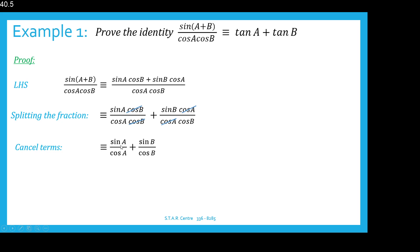After cancelling those terms and simplifying, we end up with sine A over cos A in the first fraction plus sine B over cos B in the second fraction. Since tan theta is equal to sine theta over cos theta, sine A over cos A gives tan A and sine B over cos B gives tan B. This is the right hand side of our identity, so the identity is proven.